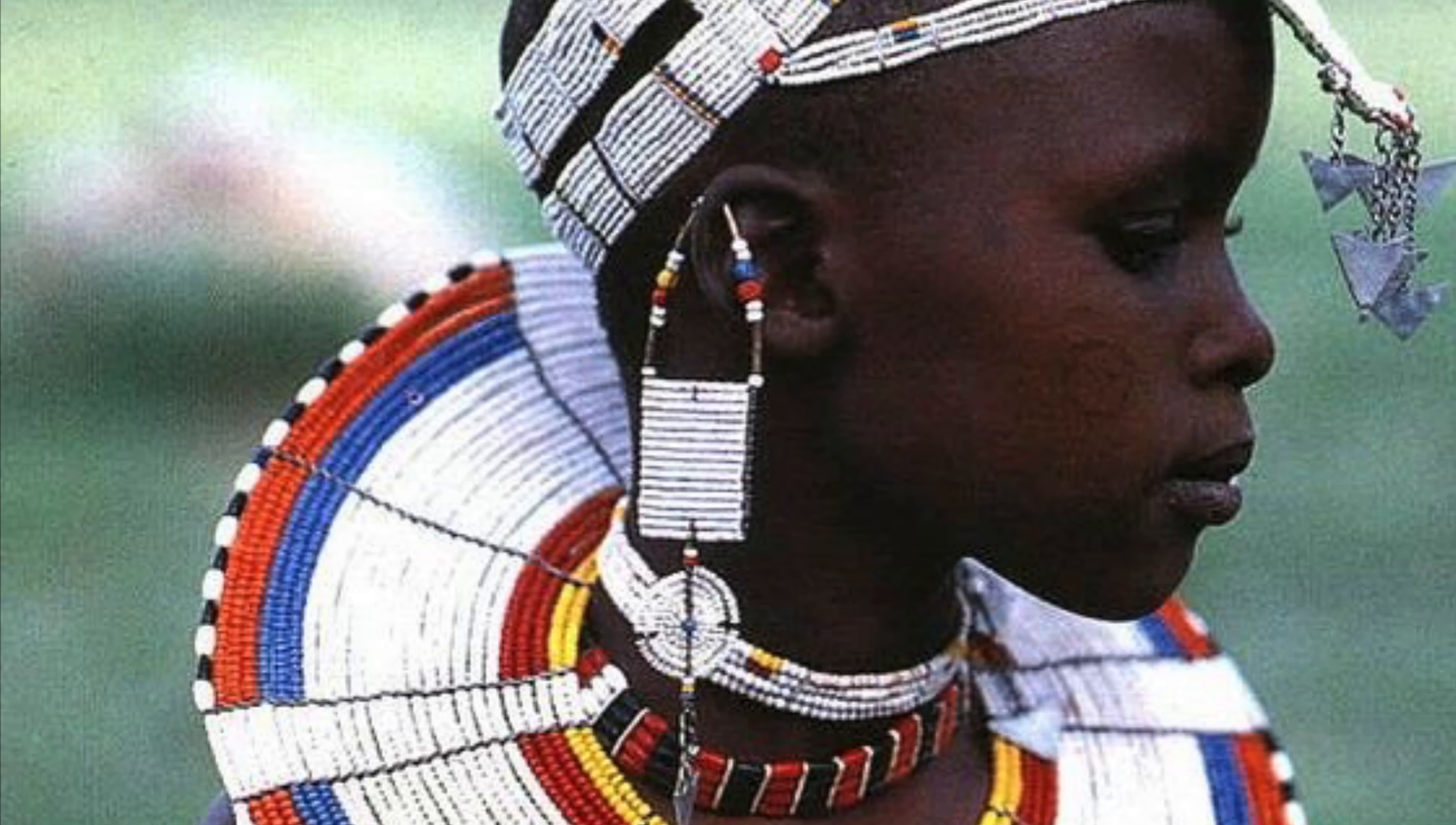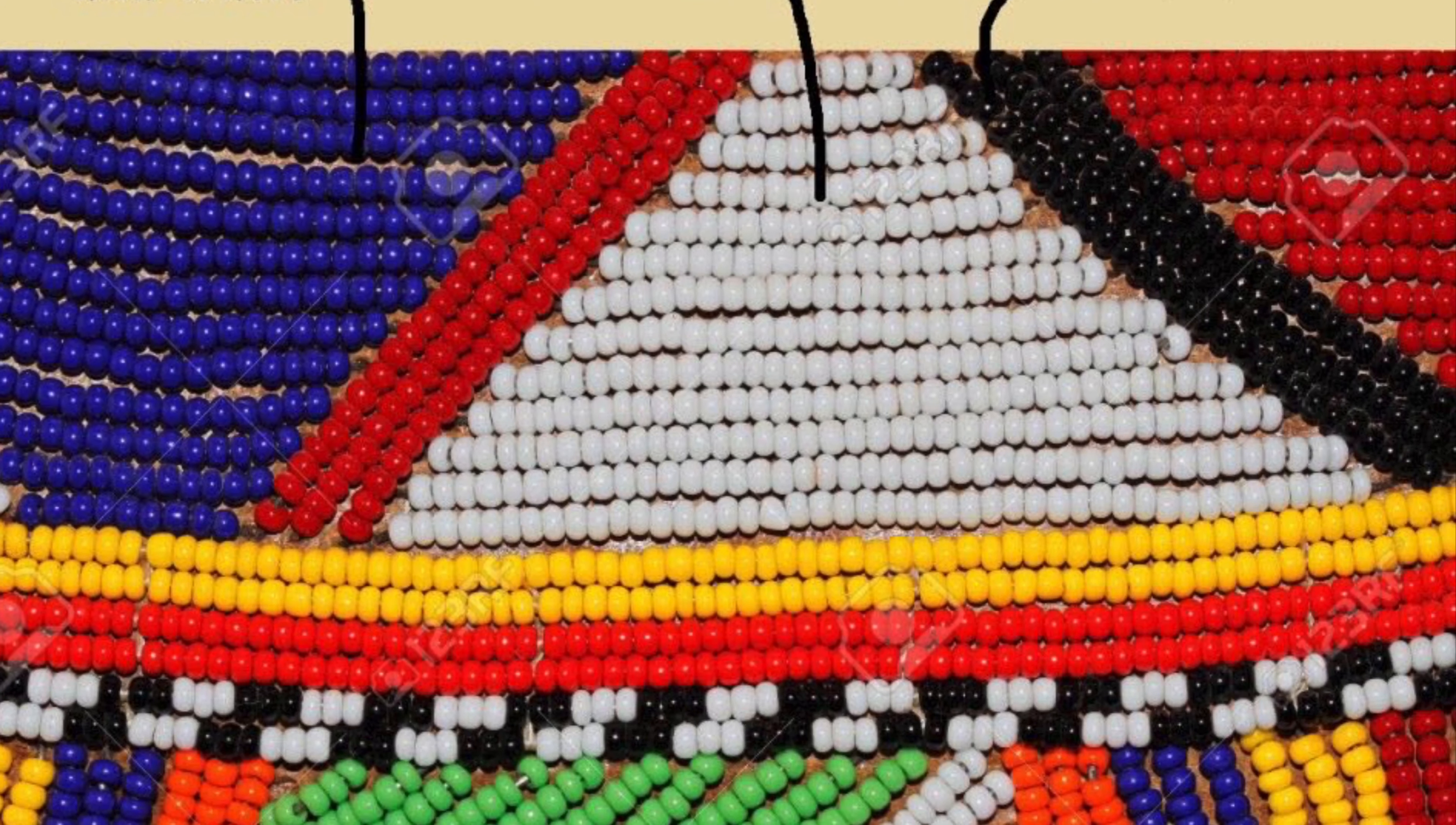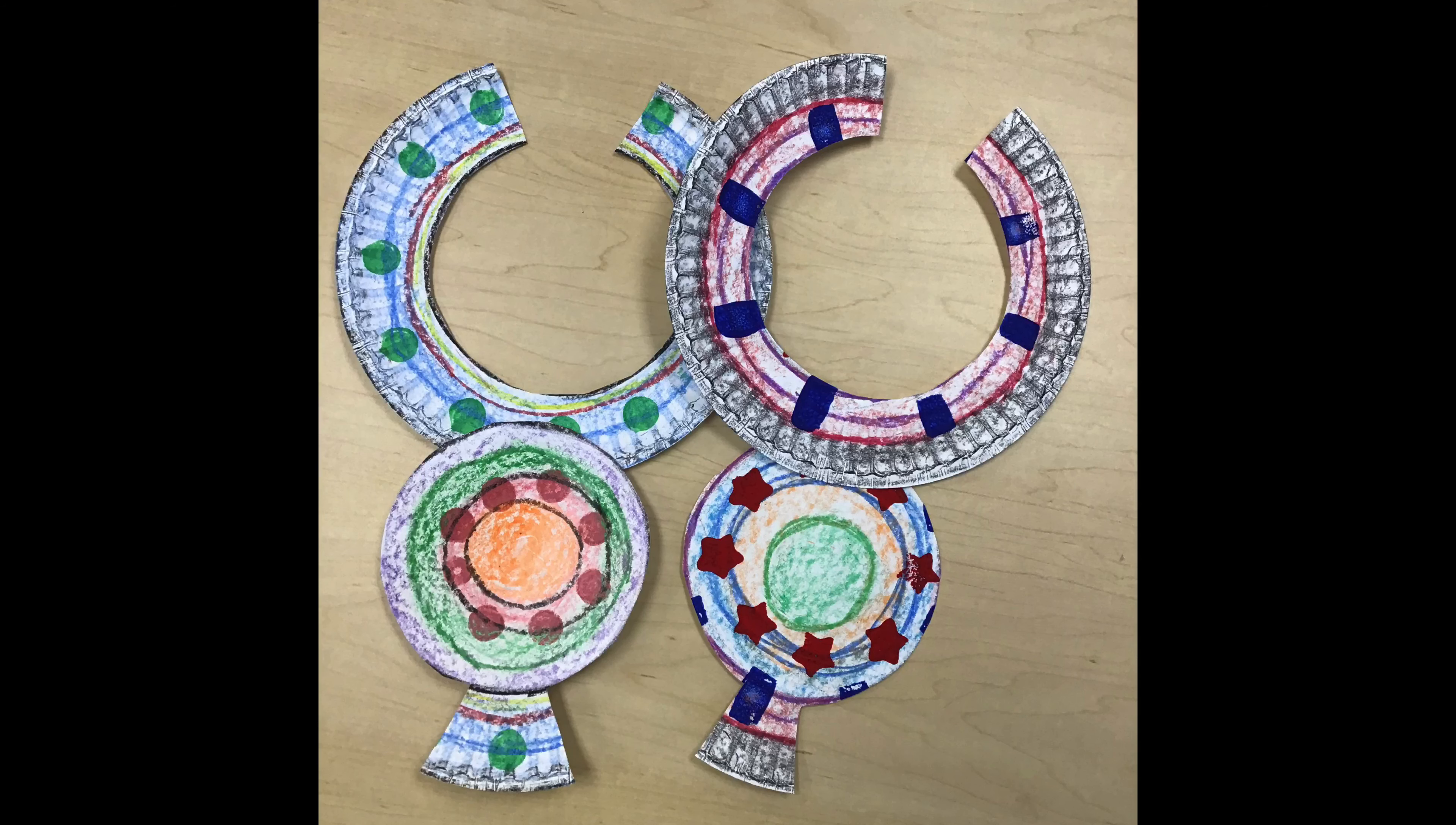So in the next slide, you will see that each color has a meaning. Blue for water. White, purity. Black, the people. Orange, hospitality. Green is for land and health. Red is for bravery and strength and yellow is energy.